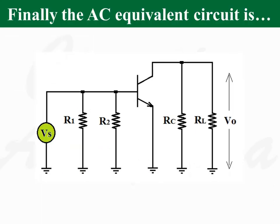Finally, we can redraw the AC equivalent circuit. In the AC equivalent circuit, input signal VS is connected between base and ground. Resistances R1 and R2 are connected between base and ground, so these two resistors are in shunt. Collector resistance RC is connected between collector and ground, and load resistance RL is also connected between collector and ground, so RC and RL are connected in shunt. This shunt combination is called the AC load of the RC coupled amplifier.